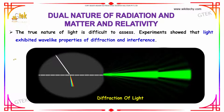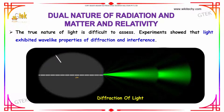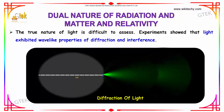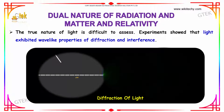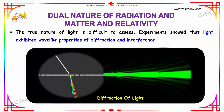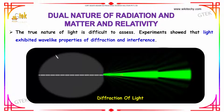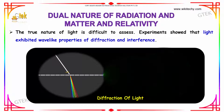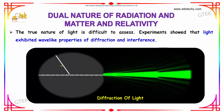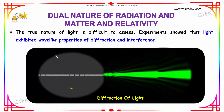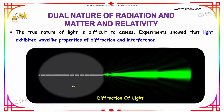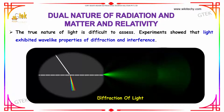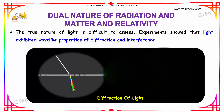The true nature of light is really difficult to assess. Experiments show that light exhibits wave-like properties of diffraction and interference. I am trying to show the diffraction of light — a single violet becomes multiple lights of different wavelengths. That's referred to as diffraction.